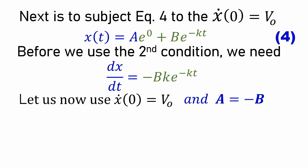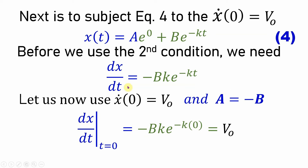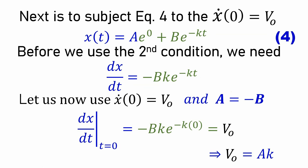Using x'(0) = v₀ and the condition A = −B: at t = 0, e^(−k·0) = 1, so −Bk = v₀. Substituting A = −B, we get Ak = v₀, therefore A = v₀/k. Consequently, since A = −B, we have B = −v₀/k.